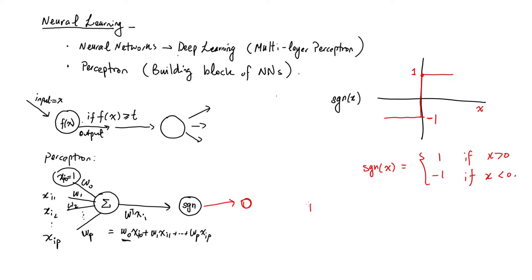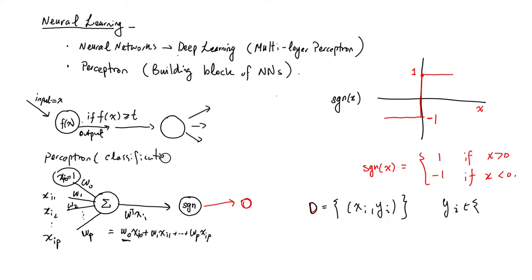If you have a dataset of (xi, yi) pairs, this is a classification problem. The yi values are either negative 1 or positive 1 — a binary classification problem. I'm using negative 1 and 1 rather than 0 and 1, because as we saw in the classification tutorial, for some tasks it's much easier to work with this labeling. For neural learning and SVMs, we tend to work with the negative 1, 1 labeling. And you can immediately see that the sign function returns negative 1 or 1, which is why it's useful here.